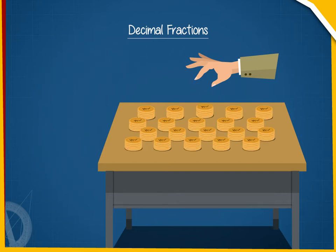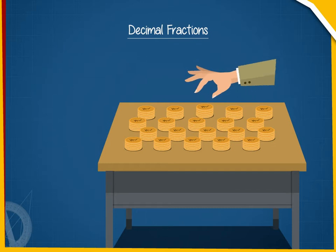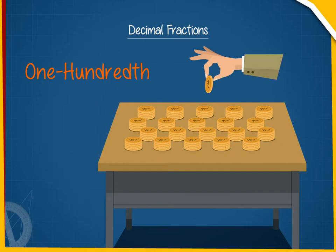We will place 100 coins on the table and take out 1 from it. It is called 1 hundredth and we can write it as 1 by 100 or as 0.01.